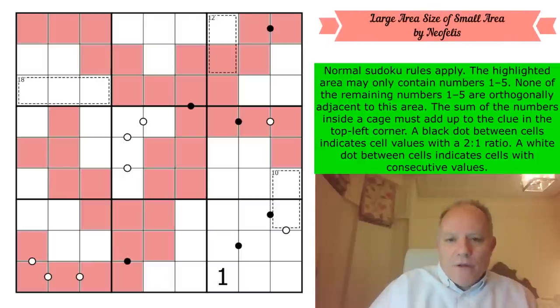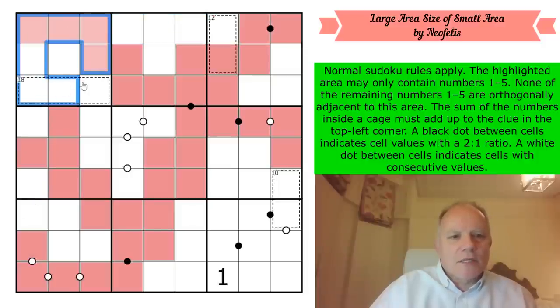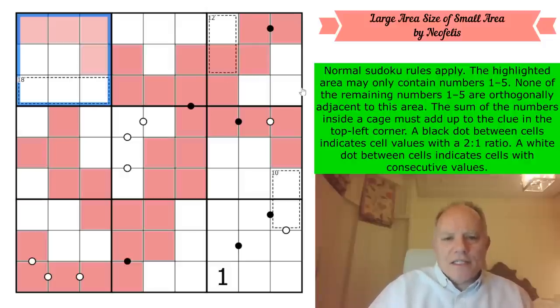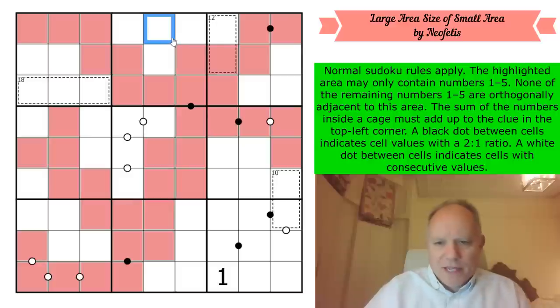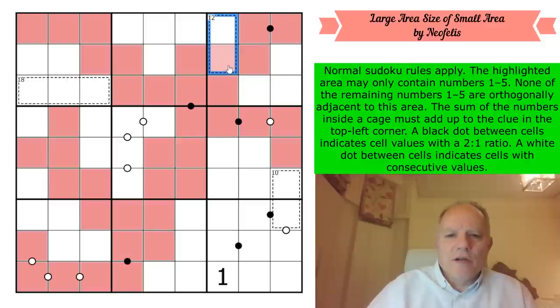Now the rules of this puzzle are normal Sudoku rules apply. That means one to nine appears in every row, every column, and every three by three box. The highlighted area, that's this splodge of red cells, may only contain the numbers one to five. None of the remaining numbers one to five are orthogonally adjacent to this area. So that means connected horizontally or vertically. So that can't be a one to five, but that in theory could be.